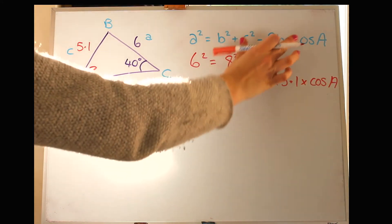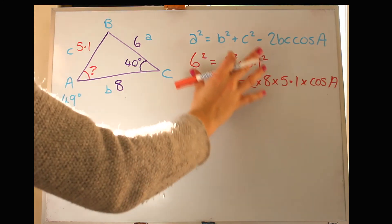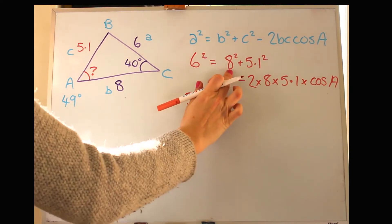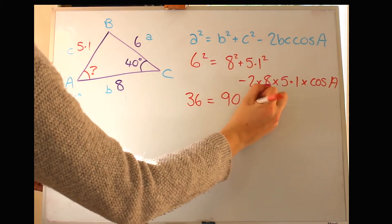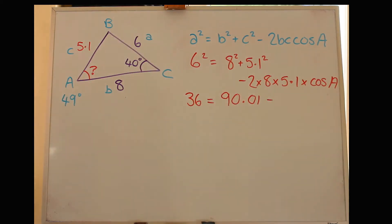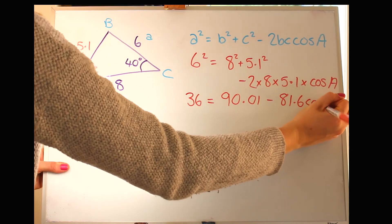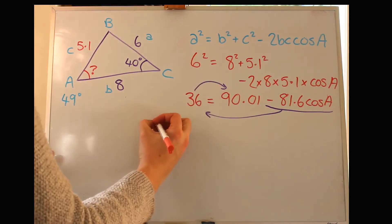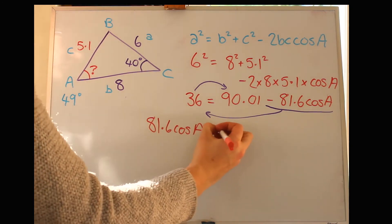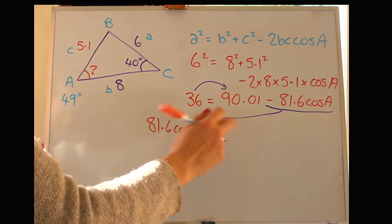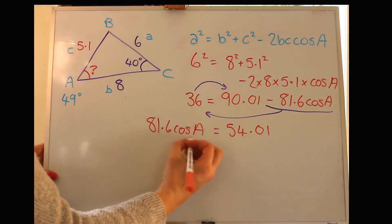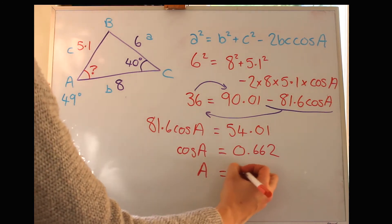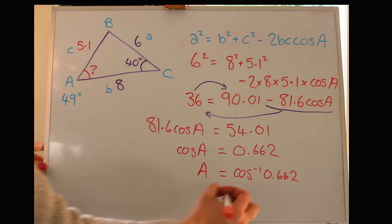All right, let's try putting in what we know. Our unknown is all the way over here. You can rearrange it with just the algebra at the beginning or you can work through and simplify some of these numbers before you rearrange. So we can make 6 squared is 36 and we can do 8 squared plus 5.1 squared which gives us that. And then the 2 times 8 times 5.1 I get to be 81.6. So that's stuck together with the cos A. Now we can move this term over to that side and move the 36 onto that side. So then we'll have a positive 81.6 cos A and 90.01 take away 36. Then we can divide the 81.6 down onto that side to get 0.662 and then take the inverse cos of that number there and just rounding the answer I do get 49 again.